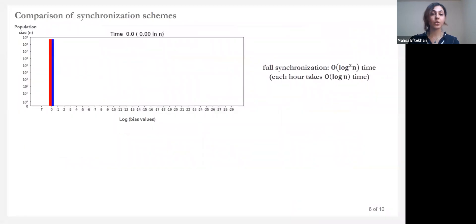We can look more closely to a simulation of the fully synchronized protocol that I just described. This is a simulation of 10 to the 9 agents with majority of red. After log n hours of cancel and split, the remaining biased agents hold the majority opinion. This protocol takes log n hours of each log n time, which is equal to total of log n squared time.